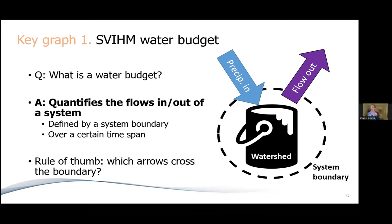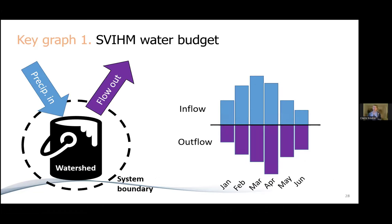Key graph one is the water budget. A water budget means quantifying the flows in and out of a system, defined by a system boundary over a certain span of time. The system boundary conceptually could be as small as a single plant or as large as a watershed. In our case it is the model domain — the aquifer, surface water, and soil extent of Scott Valley. In a simple example of a watershed with precipitation flowing in and river flowing out, you make a budget graph with inflow above zero as a positive number and outflow as a negative number — everything above the zero line is flowing in to our system and everything below it is flowing out.